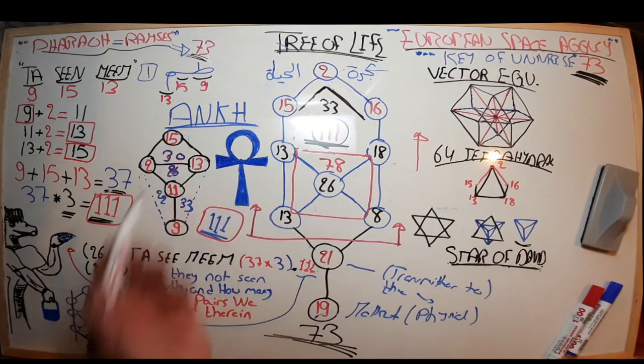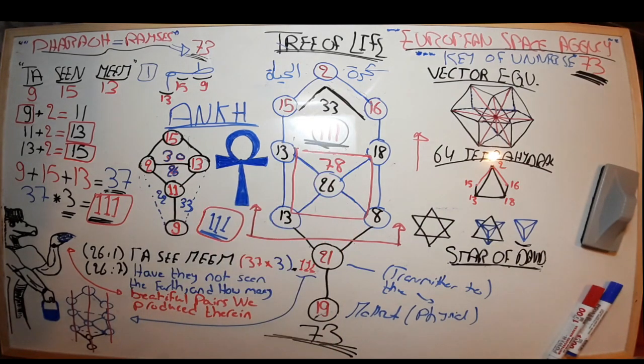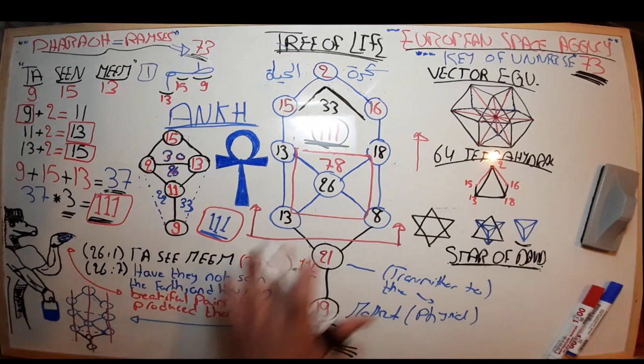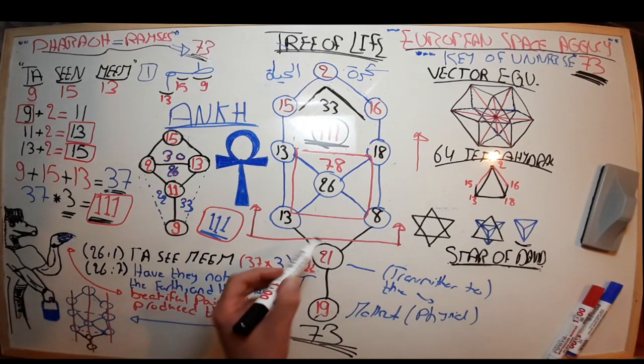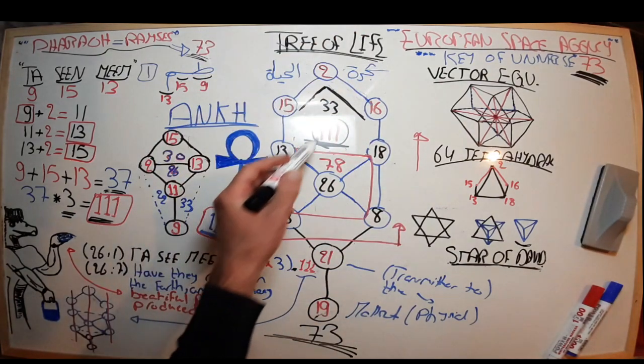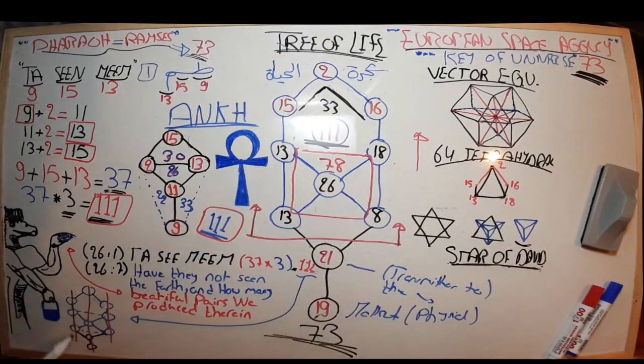If you look at how the Sumerians pictured God holding a seed of life—this seed of life—God is talking about how many beautiful pairs we produced therein. Pairs. And you tell me, okay, so how does this all relate to the Ankh or the Tree of Life?